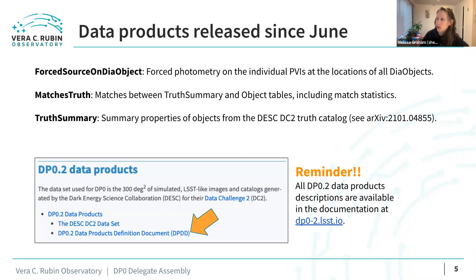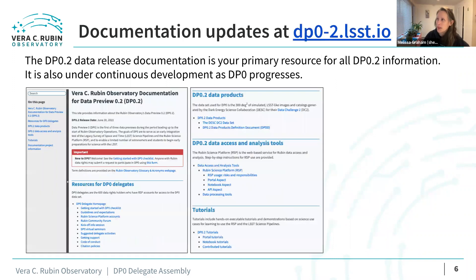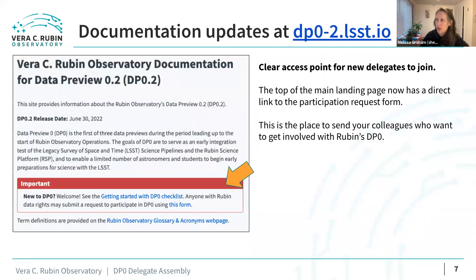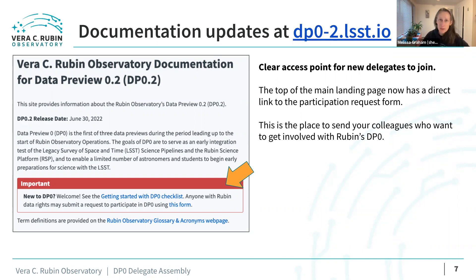Let's proceed with updates since June. The primary resource for everything related to the DP0.2 data release is at dp0-2.lsst.io — it has lots of resources for delegates including how to get support, tutorials, and all that. One of the biggest changes recently is there's now a clear access point for new delegates to join — it's now more of a continuous trickle of onboarding rather than batches. That link for how to get started and submit a request to participate is right on the main page. So that's the place to point your colleagues to.